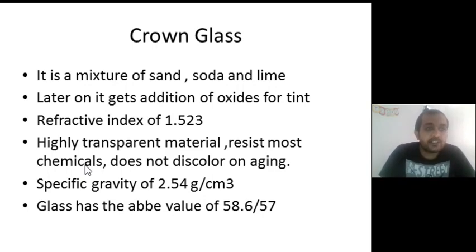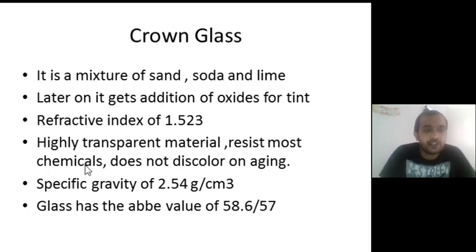Crown glass is basically a mixture of sand, soda, and lime. Later on it gets addition of oxides for the tint. The refractive index for crown glass is 1.523. It is a highly transparent material. It resists most chemicals and does not discolor on aging. This is the most big advantage of crown glass lenses. It has a specific gravity of 2.54 grams per centimeter cube and an Abbe value of 58.6 to 57.